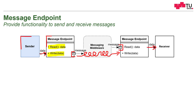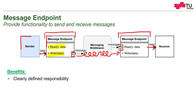The message is unpacked at the receiving endpoint and returned to the receiver. Message endpoints take over the responsibility of speaking the same protocol and communicating with each other, explicitly defining this communication point. The benefits include a clearly defined responsibility — we know exactly which component is used to communicate, and it's not distributed over multiple components. Also, all applications use the same message endpoint, and endpoints convert data to and from a message.